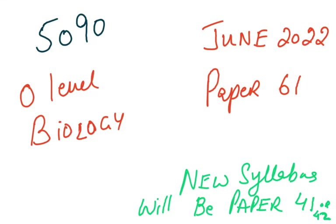This is another Paper 6 which I'm solving for you. These are the latest ones from June 2022 and November 2022. Though they do not fit the bill of the new syllabus, the new syllabus is not very different, so revising these papers will help you in the ATP paper, which will now be called Paper 4. It will not be called Paper 6 from 2023.